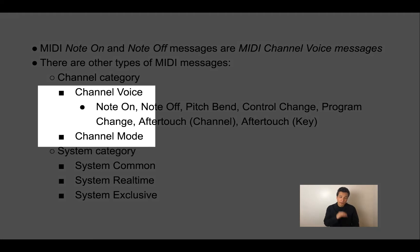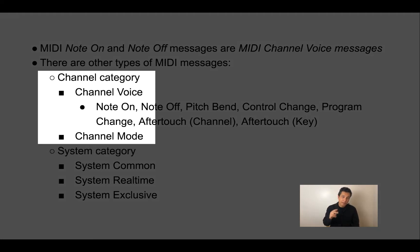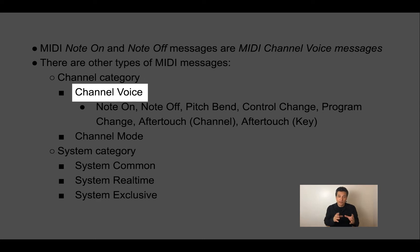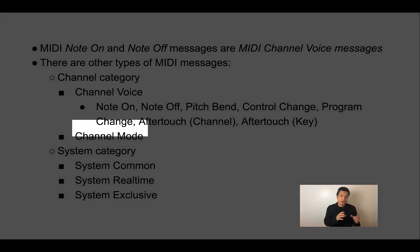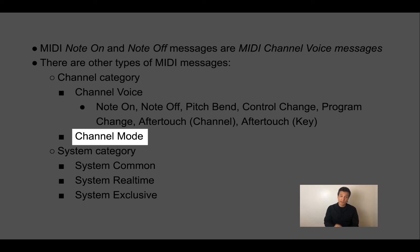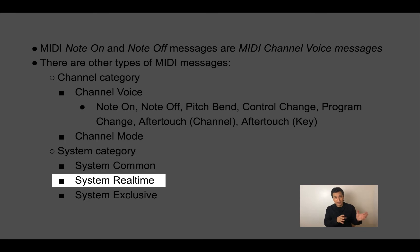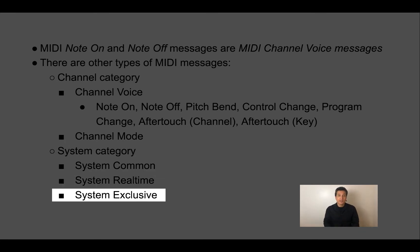Within the channel category there are two subcategories: one is a channel voice message and the other is a channel mode message. Within the system category there are three subcategories: a system common message, a system real-time message, and a system exclusive message.